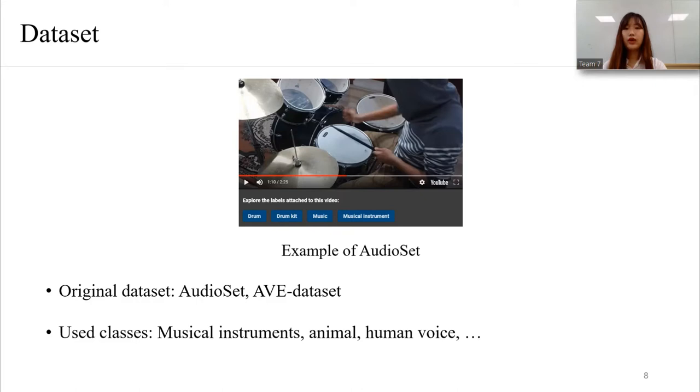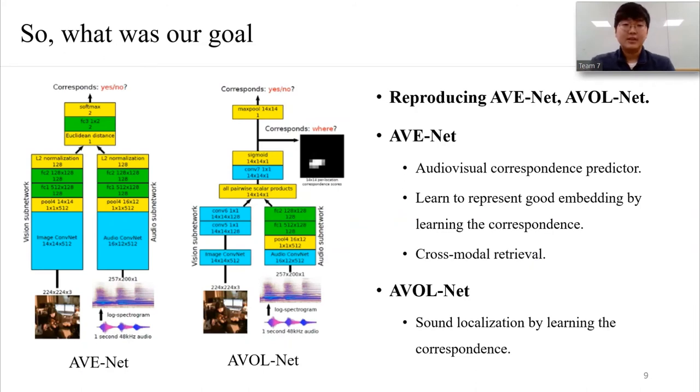We use AudioSet and AVE dataset as our datasets. Let us summarize our goal. So our goal is to implement and train AVENet, the correspondence predicting and embedding network, and AVOLnet, the network that localizes the source of sound in the image.